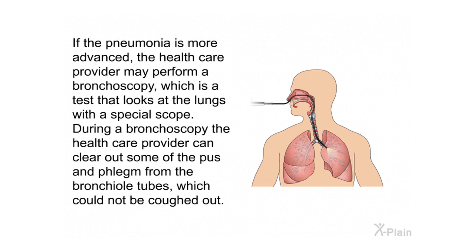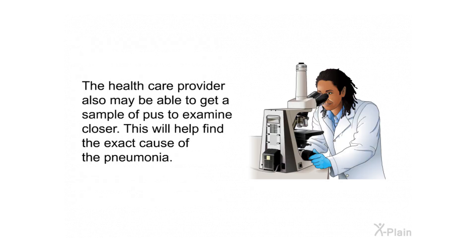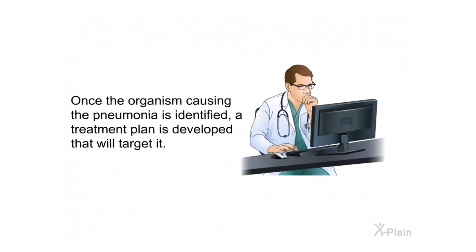If pneumonia is more advanced, the health care provider may perform a bronchoscopy — a test that looks at the lungs using a special scope. During a bronchoscopy, the provider can clear out pus and phlegm from the bronchial tubes that couldn't be coughed out, and may obtain a sample of pus to examine more closely. This helps find the exact cause of the pneumonia, and once the organism is identified, a targeted treatment plan is developed.